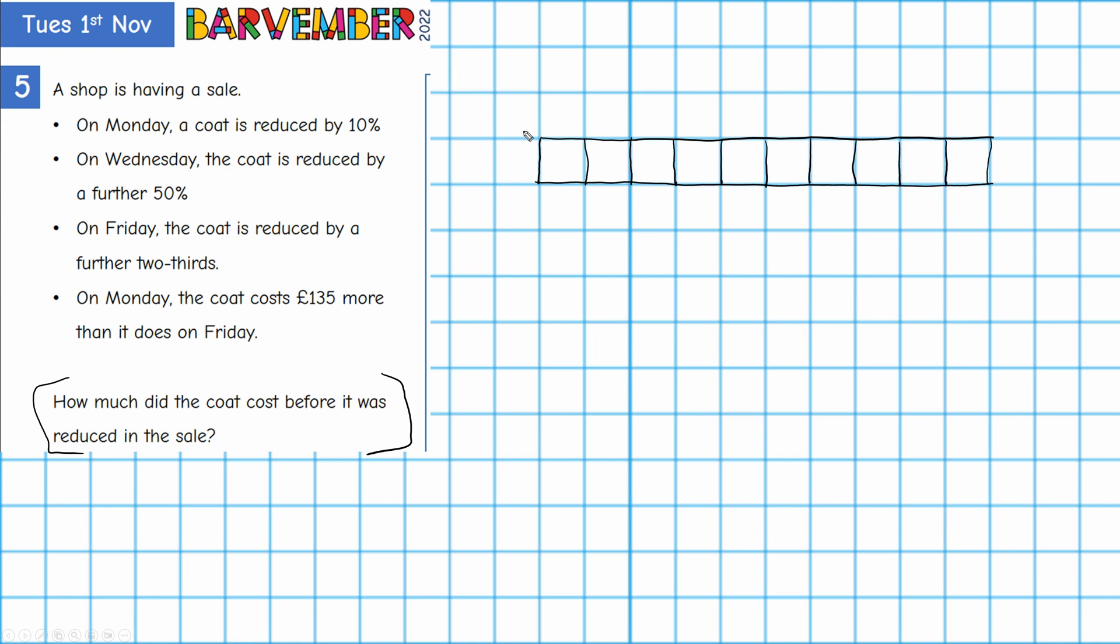And so what happens on Monday, a coat is reduced by 10%. So I'll start by putting that in. So Monday, well that's going to be one of these parts isn't it? 10%. So Monday 10%, there we go.